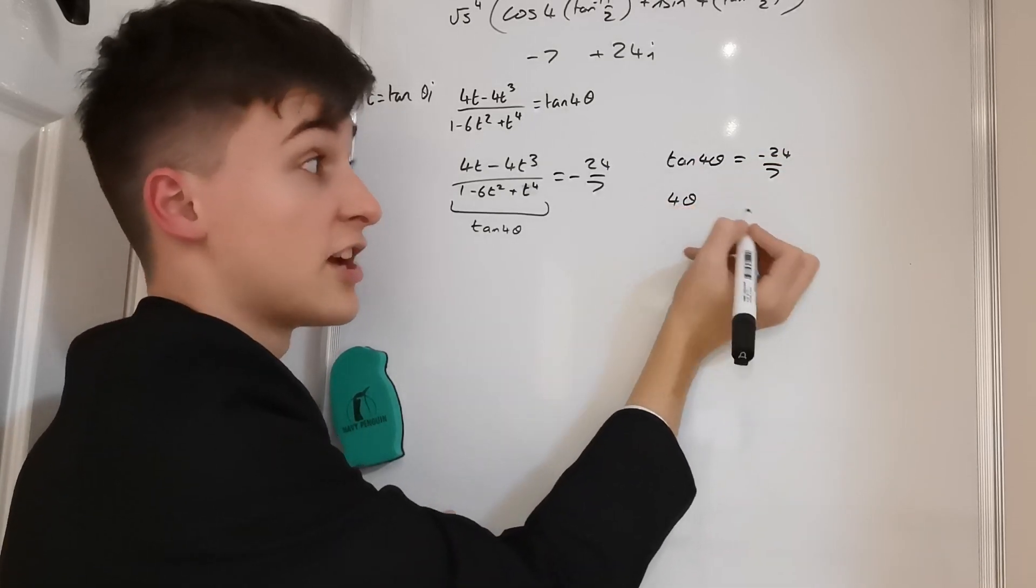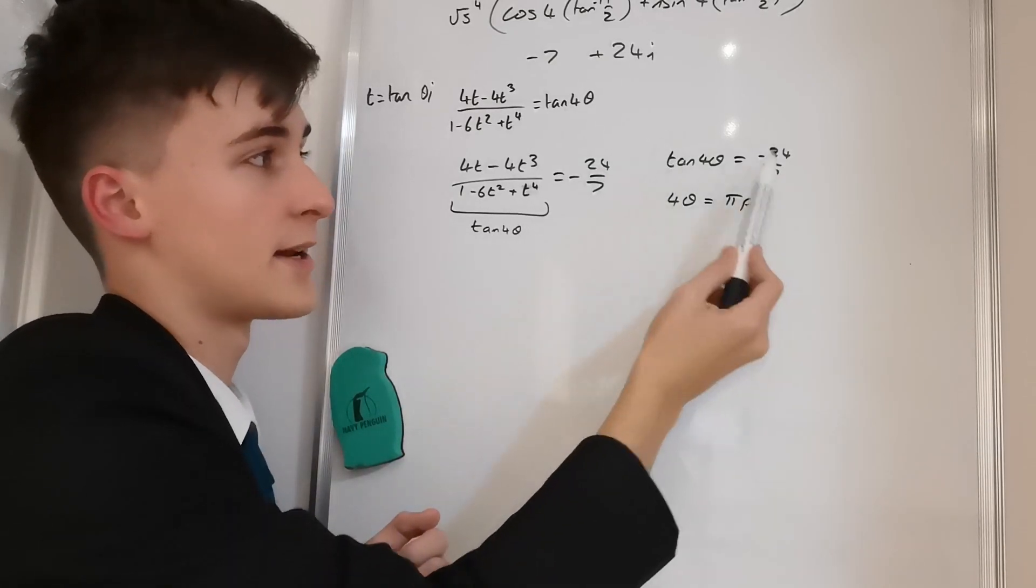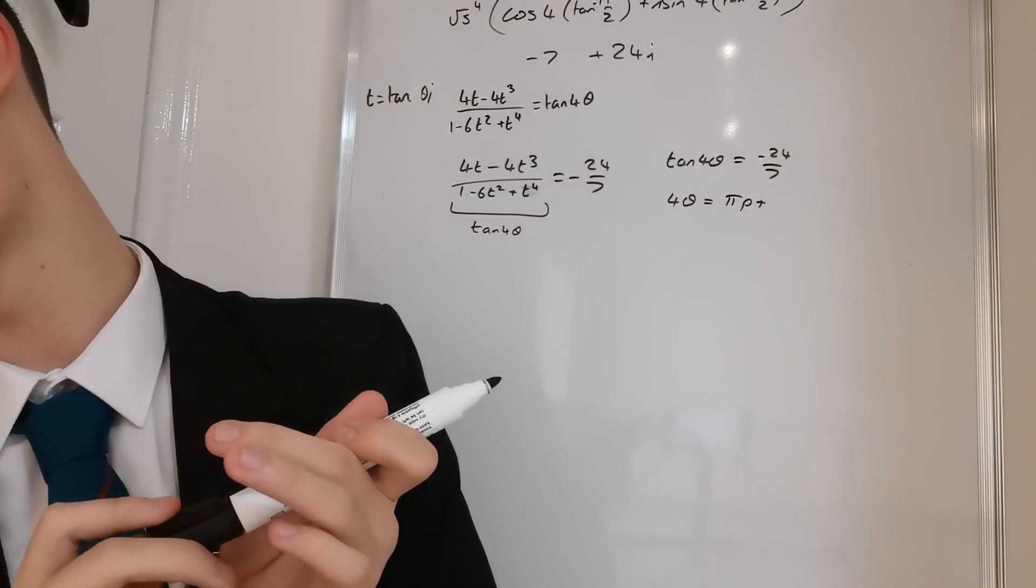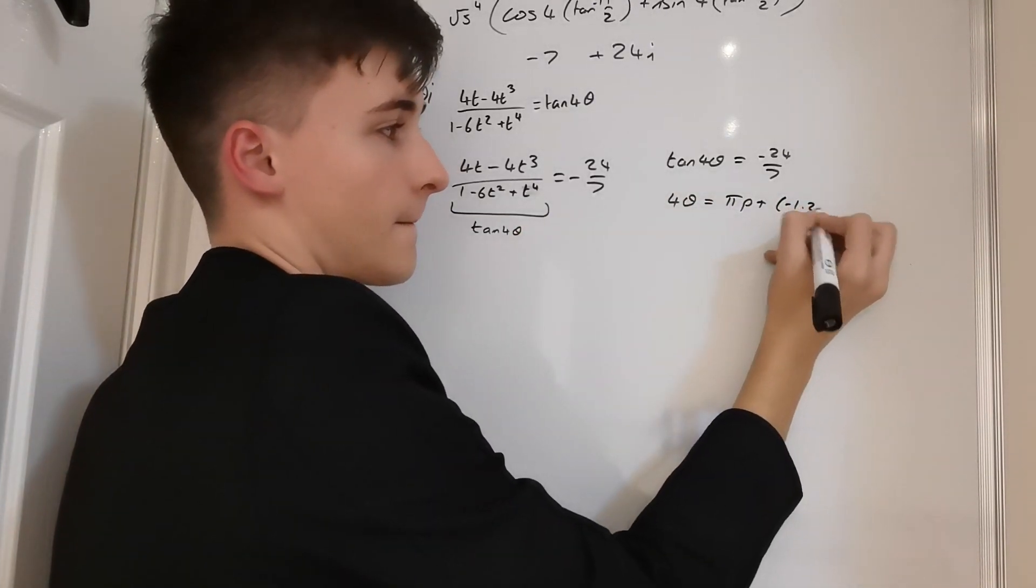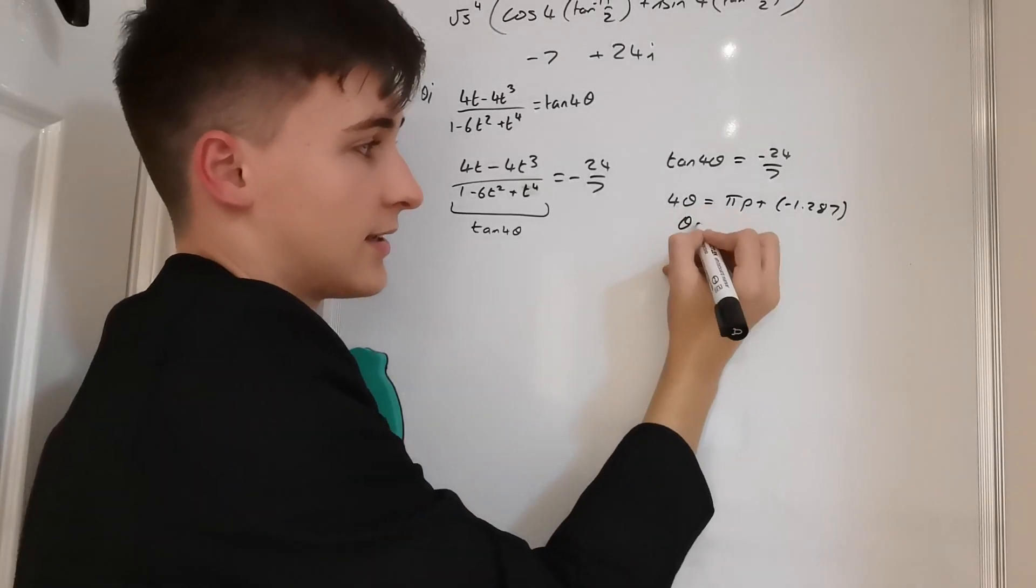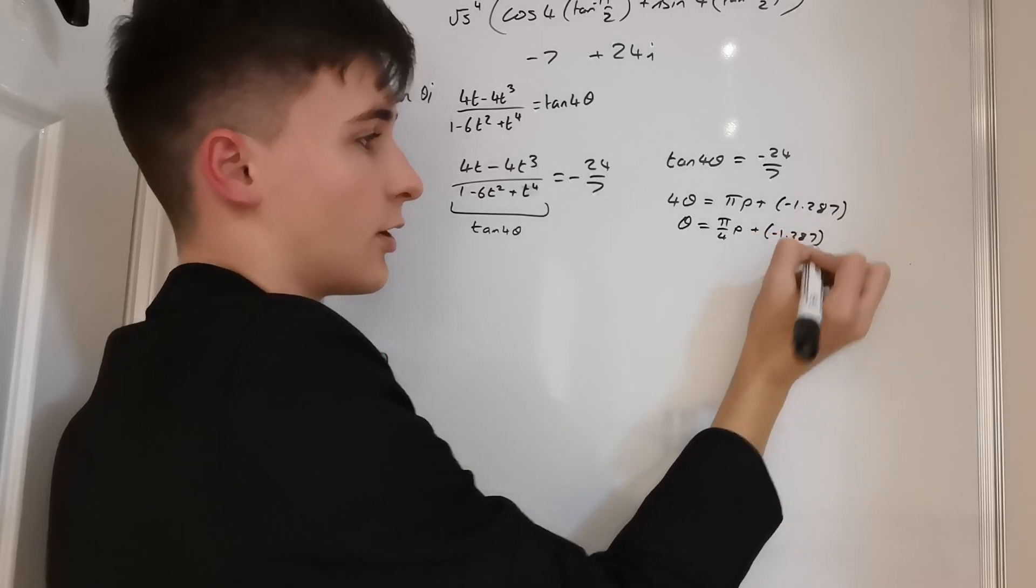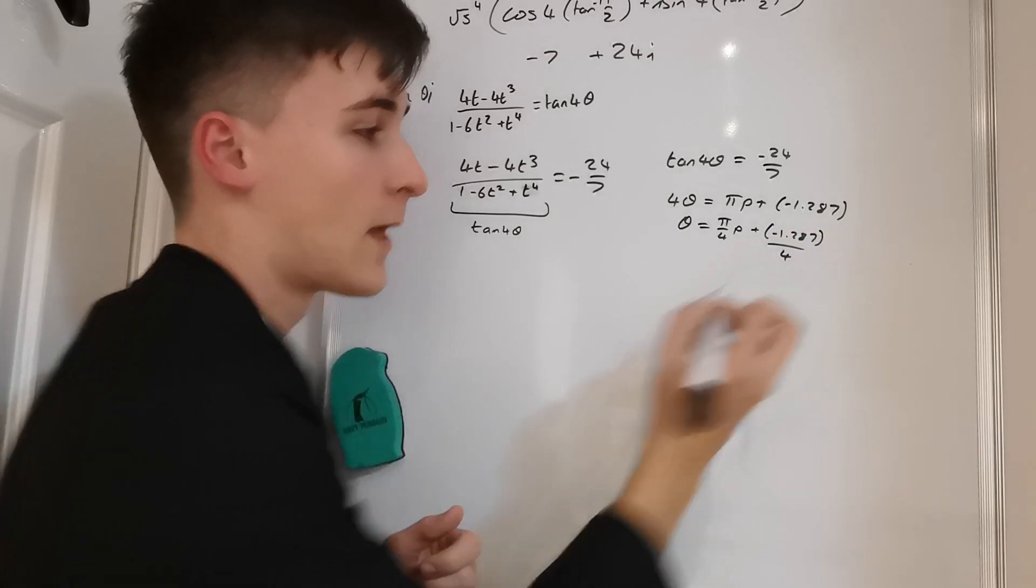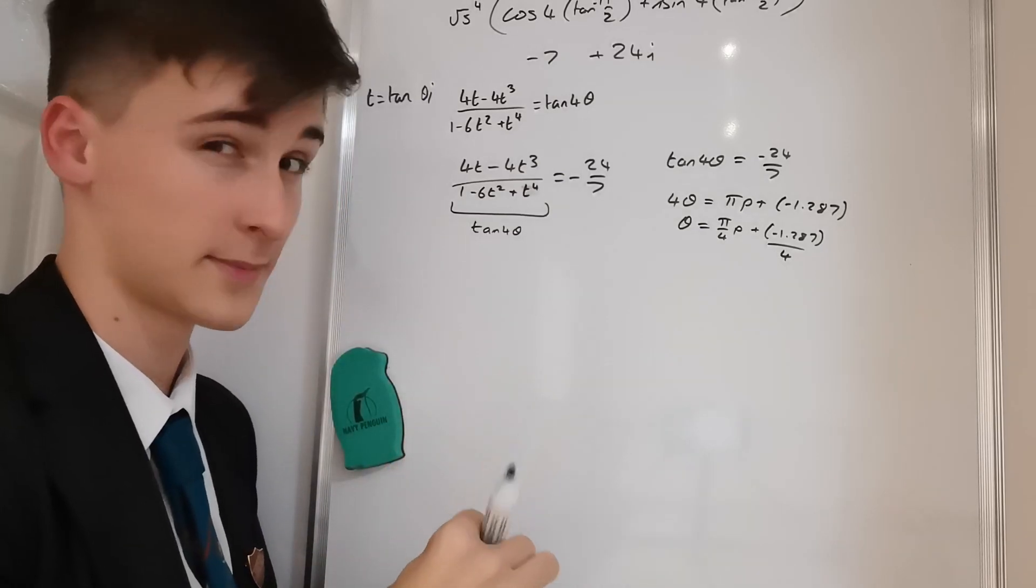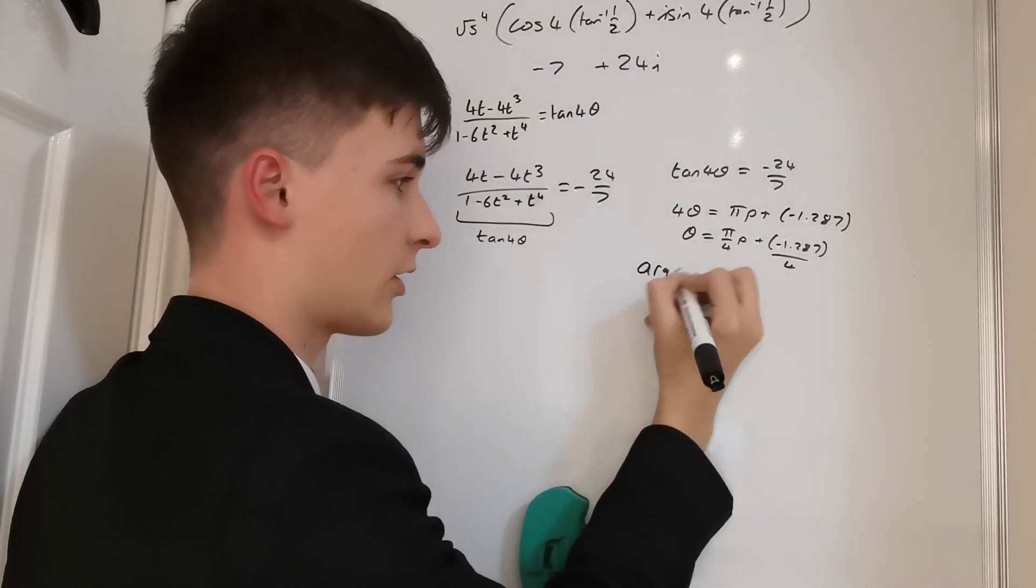tan(4θ) is equal to -24/7. That means that 4θ, according to general form, is equal to πp + tan^(-1)(-24/7), which is -1.287. And then we can say that θ is equal to (πp - 1.287)/4. Now we are going to be wanting to use the full number, all the decimal places, so you just keep that in your calculator kind of idea. Okay, so if we now consider the arg of 2+i, which is equal to 0.463 radians, and we say that p equals 1, that means that θ is going to be equal to (π - 1.287)/4, which is equal to 0.463.